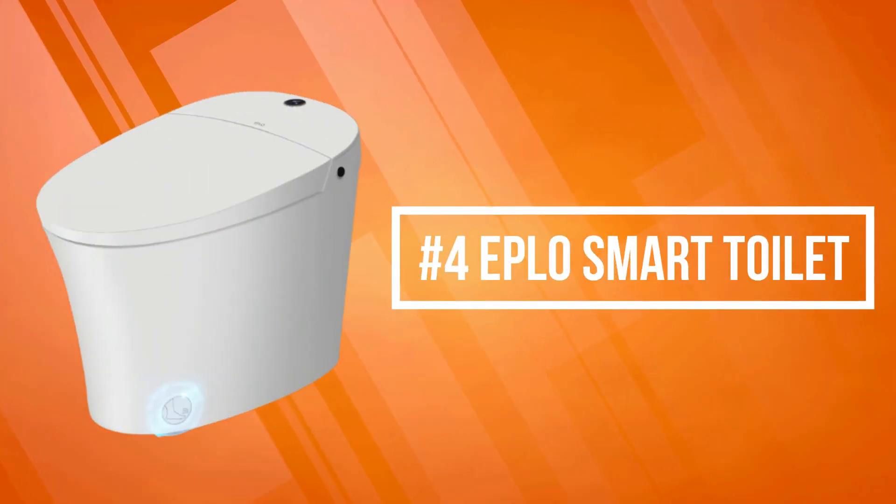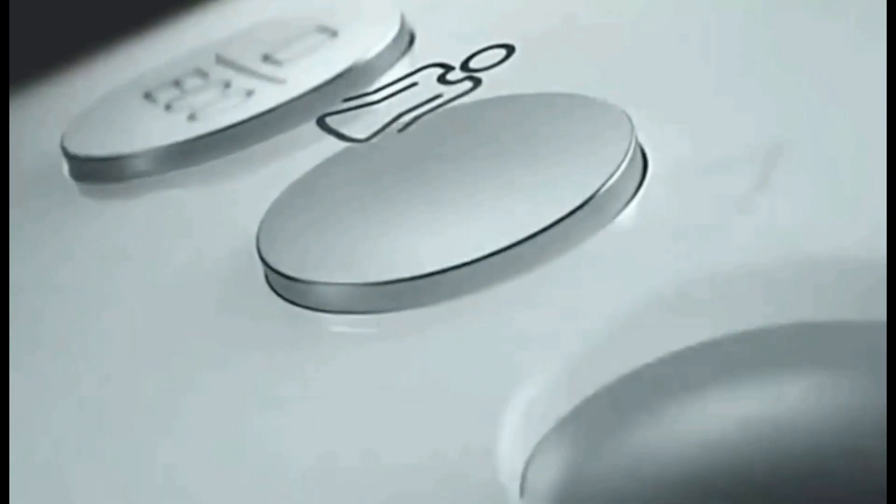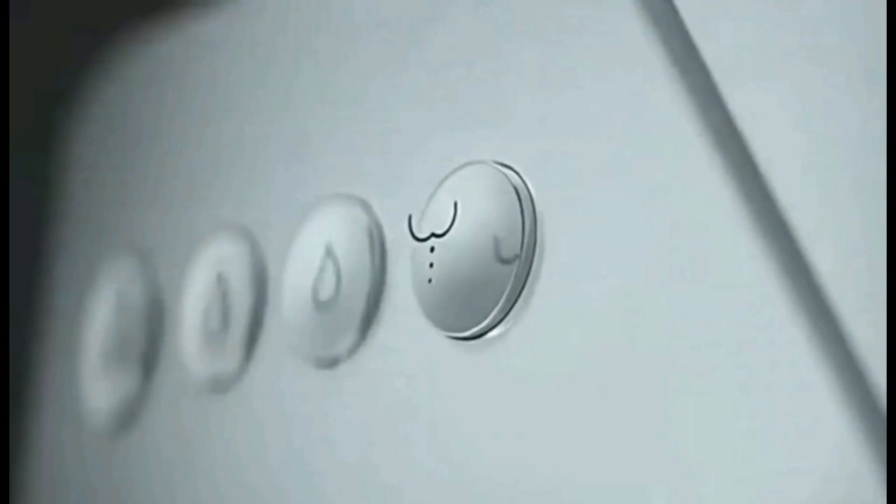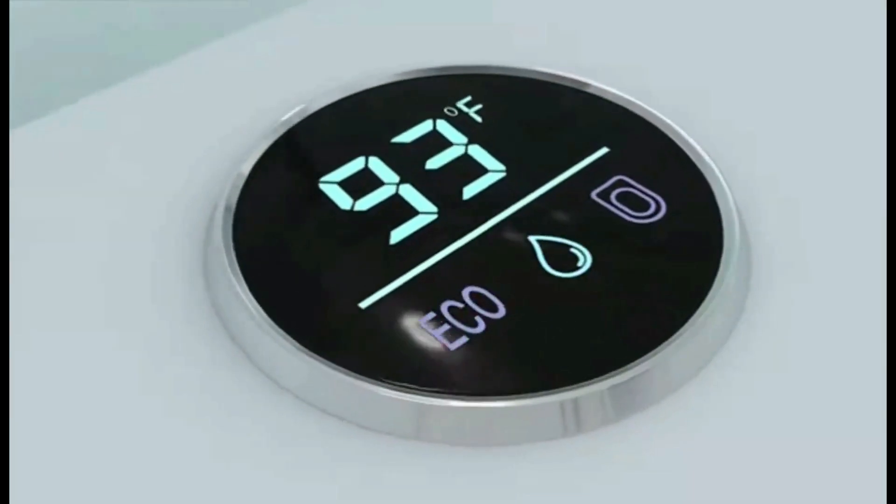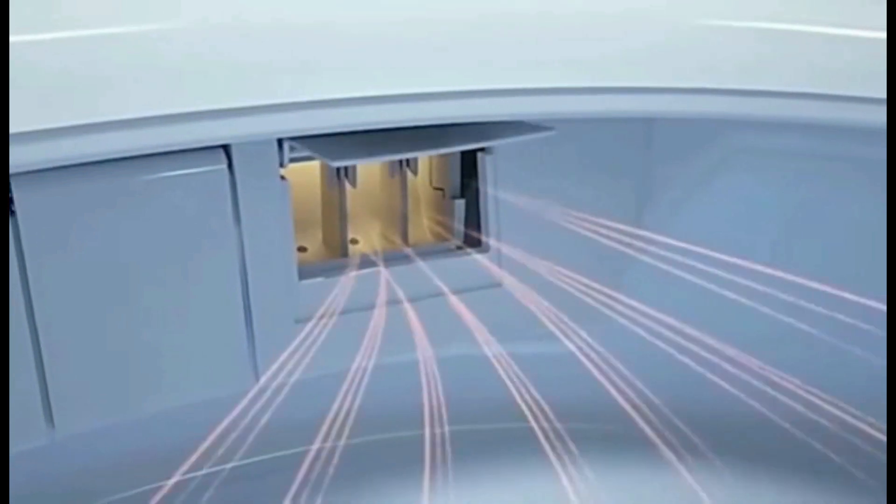At number four is the Eplos Smart Toilet. Eplos smart toilet pairs minimalist style with comfort. A full suite of convenient features includes a heated seat, nightlight, deodorization, instant warm water, warm dryer, LED display, and auto flush, plus a remote control. The self-cleaning arc wand offers adjustable spray shape, position, water pressure, temperature, pulsate and oscillate functions, and front and rear wash modes.